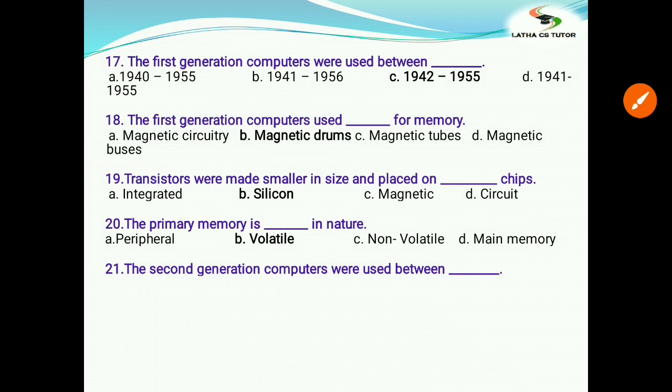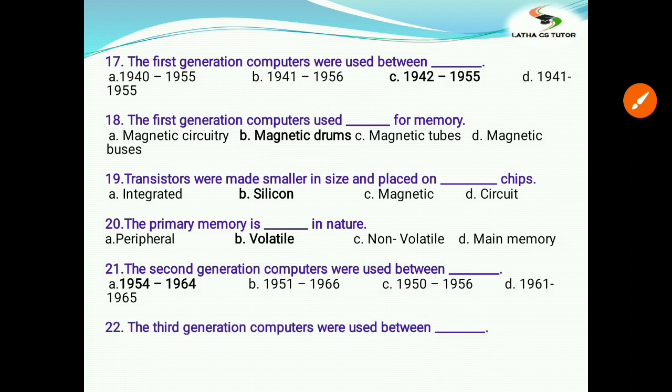The second generation computers were used between: 1954 to 64, 1951 to 66, 1950 to 56, 1961 to 65. The answer is C, 1954 to 1964. The third generation computers were used between...